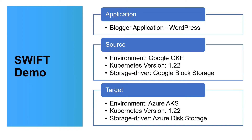In this demo, we will look at the migration of a containerized application to Azure AKS cluster. The source that we will be using is a Google GKE cluster, and the application that we will be migrating is a blogger application, WordPress.